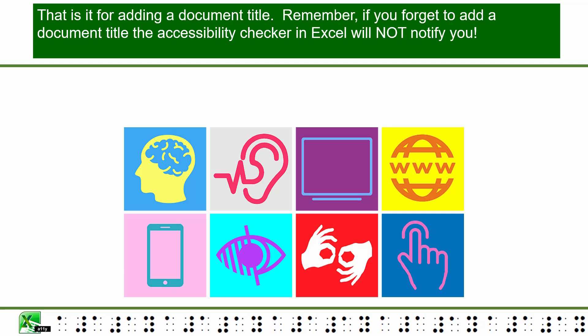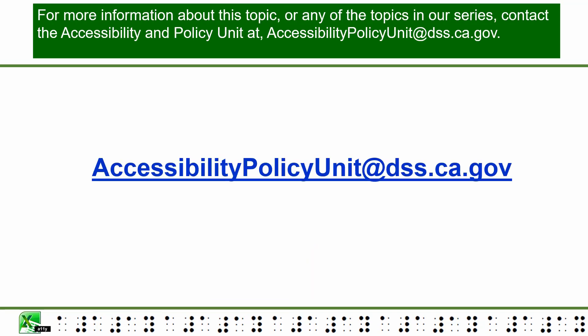That is it for adding a document title. Remember, if you forget to add a document title, the Accessibility Checker in Excel will not notify you. For more information about this topic or any of the topics in our series, contact the Accessibility and Policy Unit at accessibilitypolicyunit@dss.ca.gov.